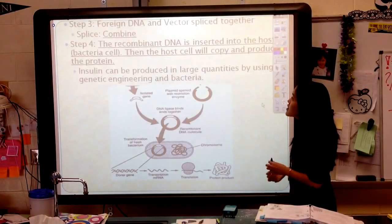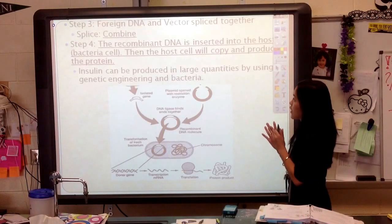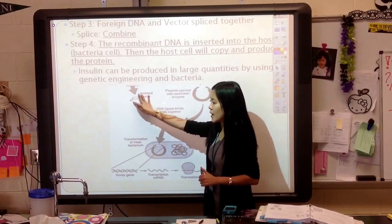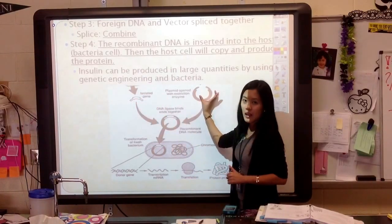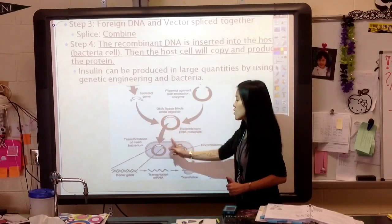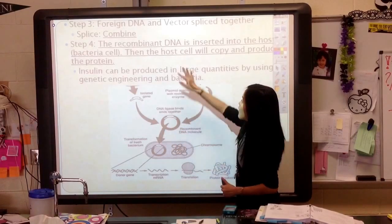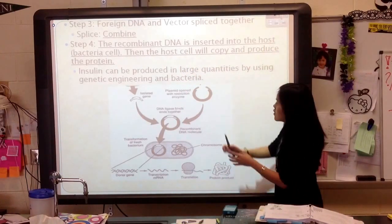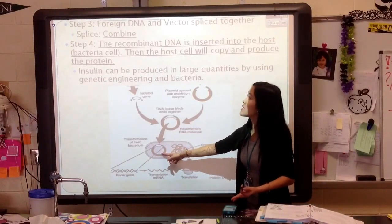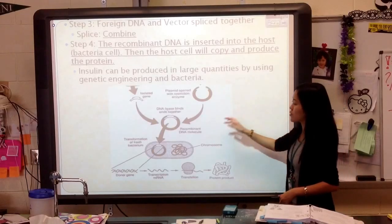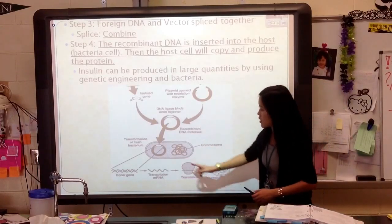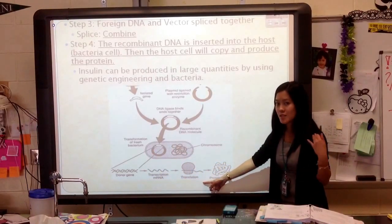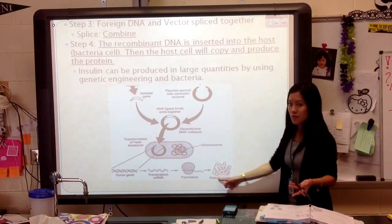The third step is that we'll combine the foreign DNA and the vector and splice them together. So here's the gene we got from our organism, and here's the DNA from the bacteria — we put them together, and now this is called your recombinant DNA. After that, the recombinant DNA is inserted into the host, usually a bacterial cell. Then the host cell will copy and produce the protein. The gene goes through transcription and translation — processes we've already talked about that are involved in protein synthesis.